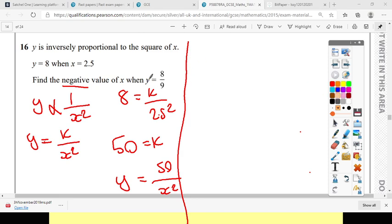Now we need to find a negative value of X when Y equals 8/9. So I've got 8/9 equals 50 over X squared, and all I have to do is solve it. I'm going to cross multiply by multiplying both sides by 9 and then by X squared. So I've got 9 times 50, which is 450.